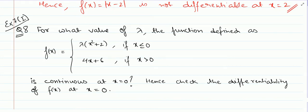Next question is question number 8 from exercise 7-1. For what value of lambda is the function defined as this continuous at x equal to 0, and then check the differentiability of f of x at x equal to 0. For x less than or equal to 0 it is lambda x square plus 2, and for x greater than 0 it is 4x plus 6. We find lambda so the function is continuous at x equal to 0, then substitute and check differentiability.